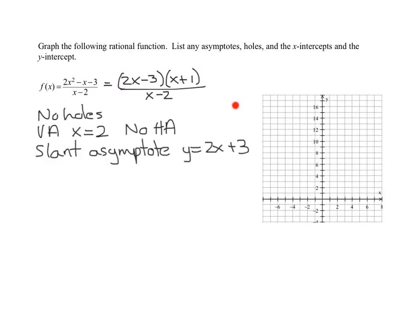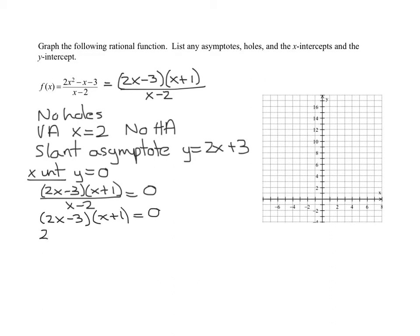I've summarized all the information I found on the previous slide. Now all we have to do are find x and y intercepts. Let's start out with the x intercepts first. How do we find them? You set y equal to 0. That means set f of x equal to 0. We've already factored it. So I'm going to use my factored form. Here's f of x and it equals 0. When does a fraction equal 0? When the numerator equals 0. So we're going to set the numerator equal to 0.